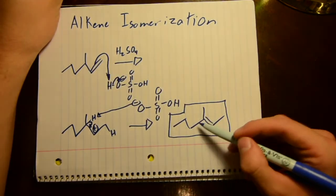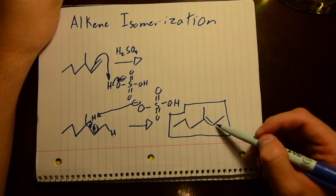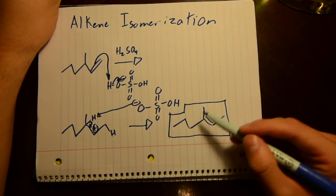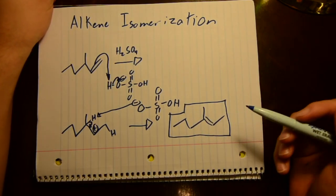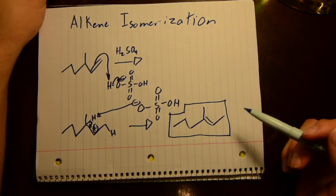Here it has one, two, three carbons connected to this double bond, making it more stable. So that's alkene isomerization.